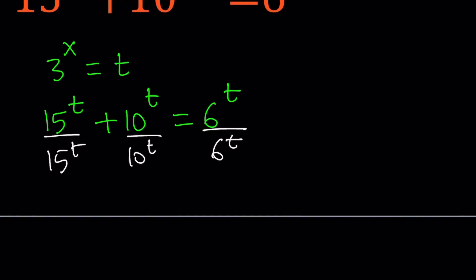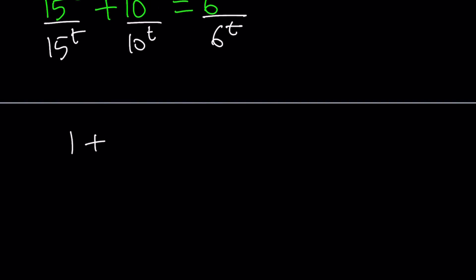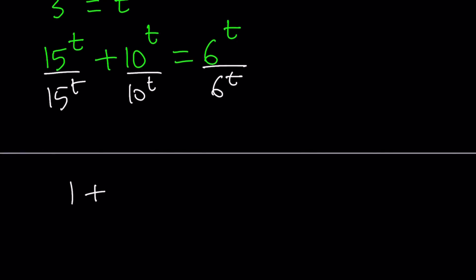Obviously, we're going to get a 1 here, which is nice. I'm dividing everything by itself, which is weird. Okay, let me repeat this. We're dividing everything by 15 to the power t. Now this gives us 1 plus 10 over 15 to the power t equals 6 over 15 to the power t.